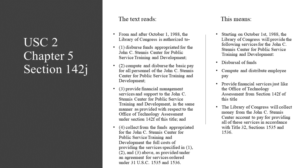This means: Starting on October 1, 1988, the Library of Congress will provide the following services for the John C. Stennis Center for Public Service Training and Development: disbursal of funds, compute and distribute employee pay, and provide financial services just like the Office of Technology Assessment from Section 142F of this title. The Library of Congress will collect money from the John C. Stennis Center account to pay for providing all of these services in accordance with Title 32, Sections 1535 and 1536.